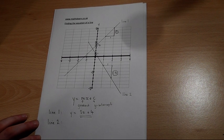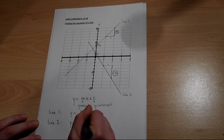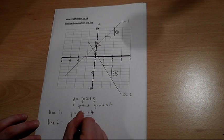So line two has an equation y equals gradient minus four x, plus intercept of one, so plus one.